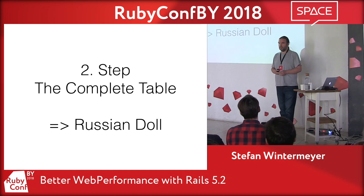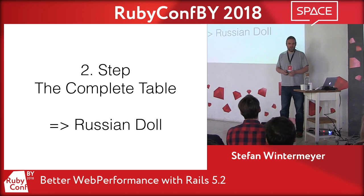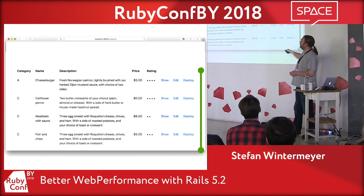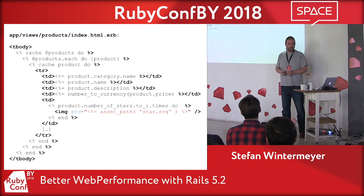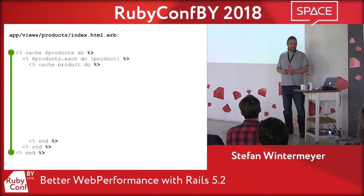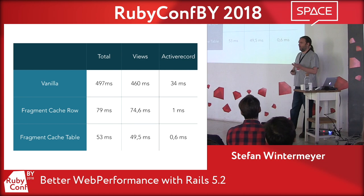The next step is what DHH always calls Russian Doll caching. We create a cache for the whole table too — one cache for each row and one cache for the whole table. Again, two more lines of code. That results in 53 milliseconds. We added four lines of code and improved by tenfold — very powerful.